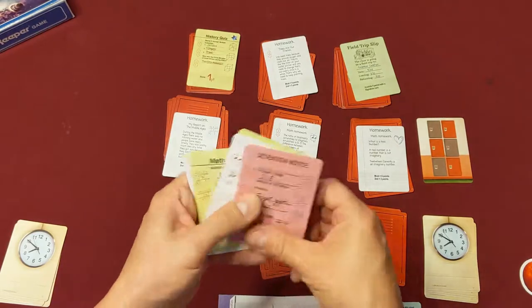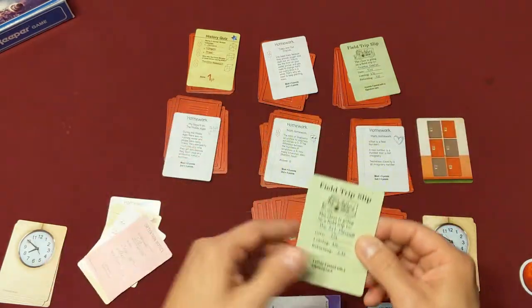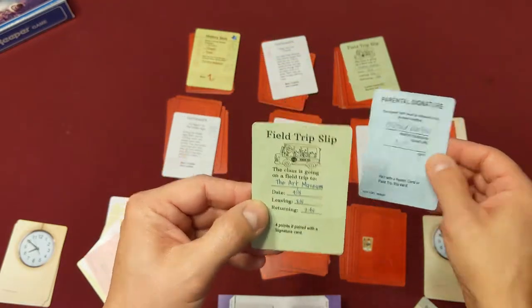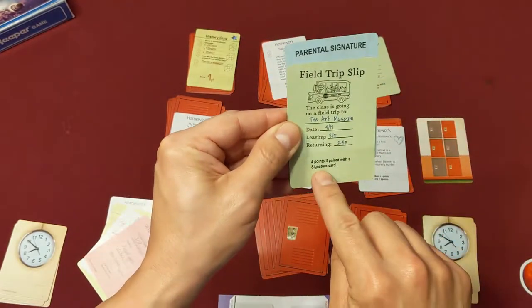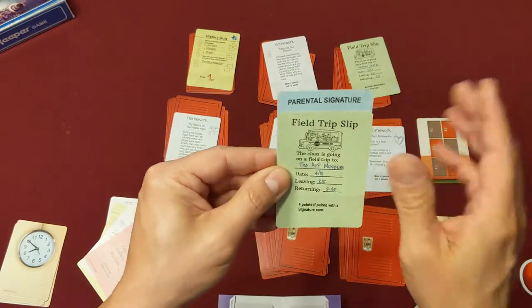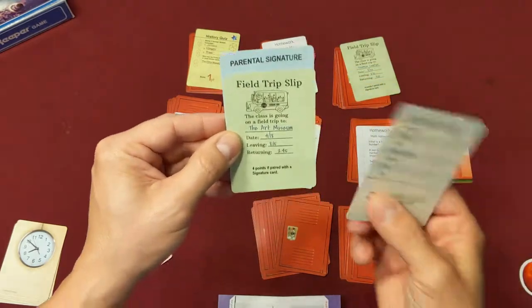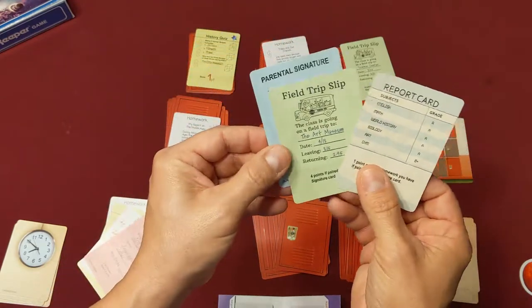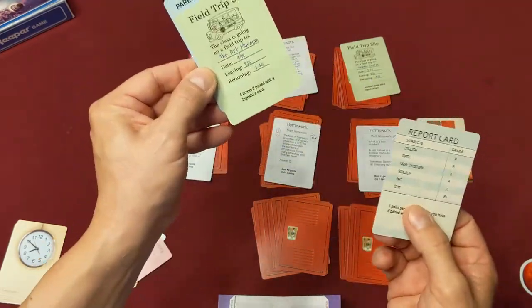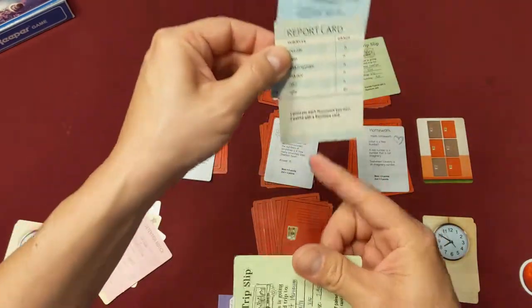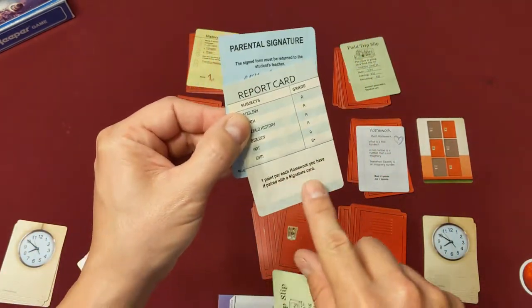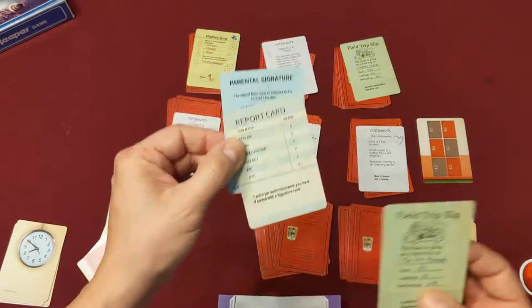There's another card that comes along though that needs a signature also, and that's your field trip. You cannot go on the field trip unless your parents sign the release note. So you pair it with this and now you'll get four points if paired with a signature card. But you can only pair your signature card with one or the other, not both. So if I want the four points from the field trip, I'd pair it there. If I want the four points or however many points I'm going to get for the homework, I'd pair it there.